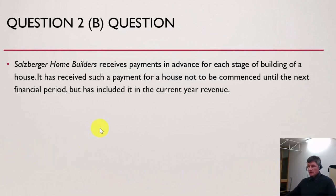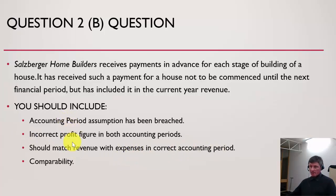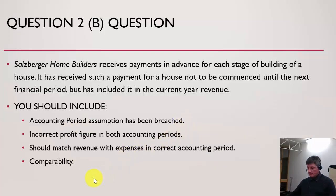Another question: a business received payment in advance but did not include it in the current year's revenue. The accounting period assumption has been breached — profit would be misstated in both accounting periods, understated in one and overstated in another. We should match revenues with expenses in the correct accounting period. Remember, whenever you talk about the accounting period also mention the matching principle — this is important to get full marks. Also consider how you can compare one period to the next when profit is inflated in one and under-reported in the next.